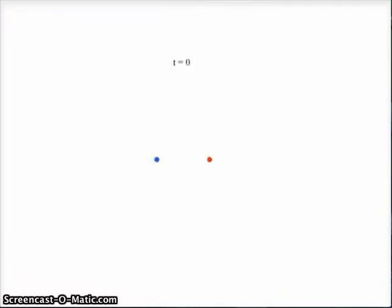Here we have two wave sources, one in blue, one in red. This is at t equals zero, so they are just about to emit a wave, which we'll see in just a moment here.